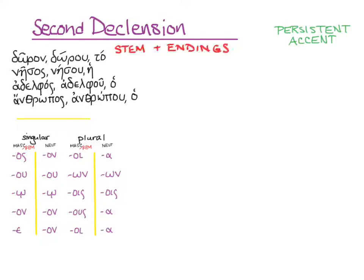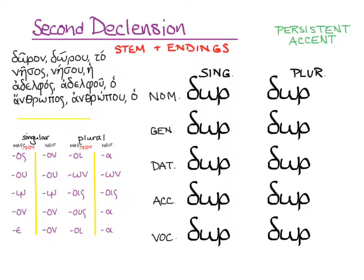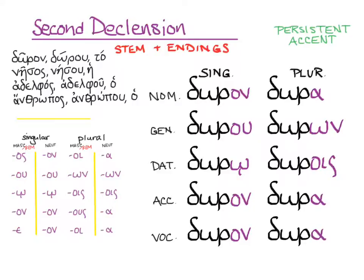Here are the endings and our rule. Here are the stems of dōron — the genitive without the -ou — all laid out. Let's add the endings and the accents, which try to stay a circumflex on the omega. But it has to change into an acute when the ending is long in the genitives and datives, because the accent rules won't allow a circumflex over the second-to-last syllable if the last syllable is long. So: dōron — gift; dōrou — of gift; dōrō — for gift; dōron — gift; dōron — gift in singular. Dōra — gifts; dōrōn — of gifts; dōrois — for gifts; dōra — gifts; and dōra — gifts in the plural.